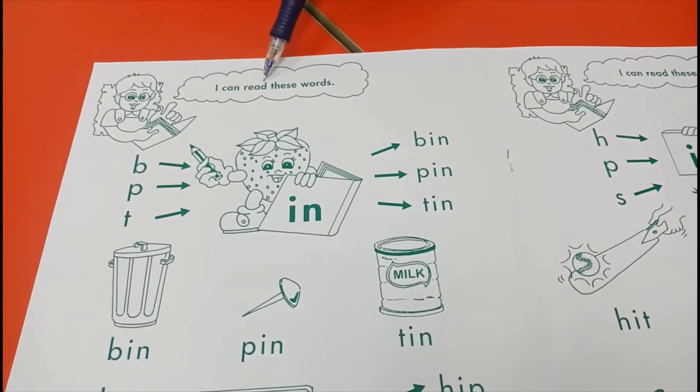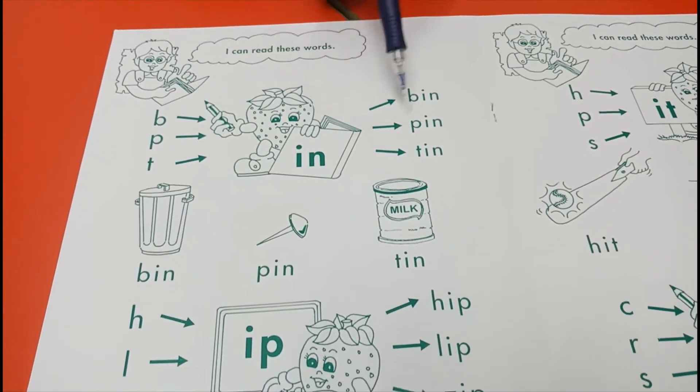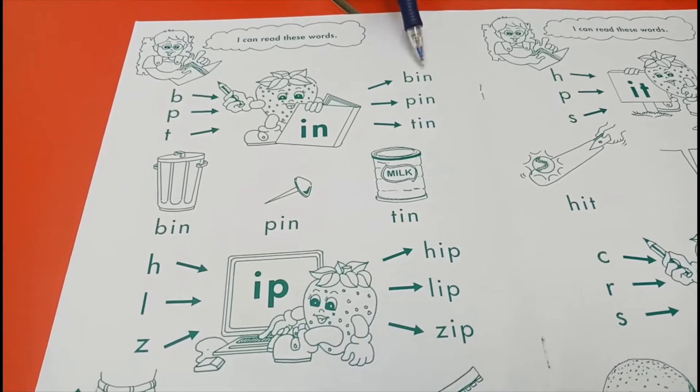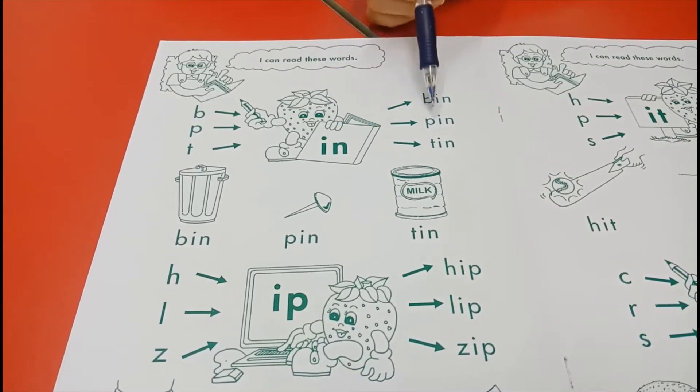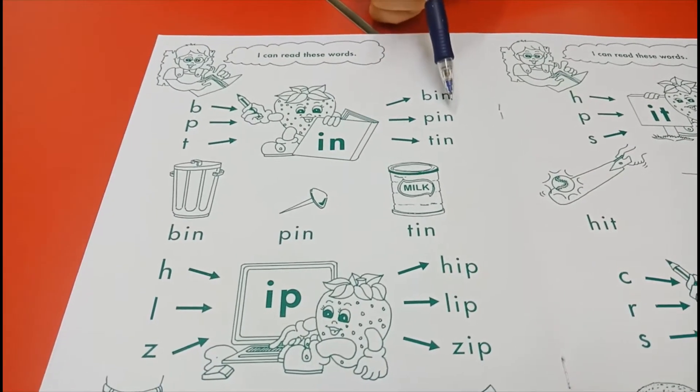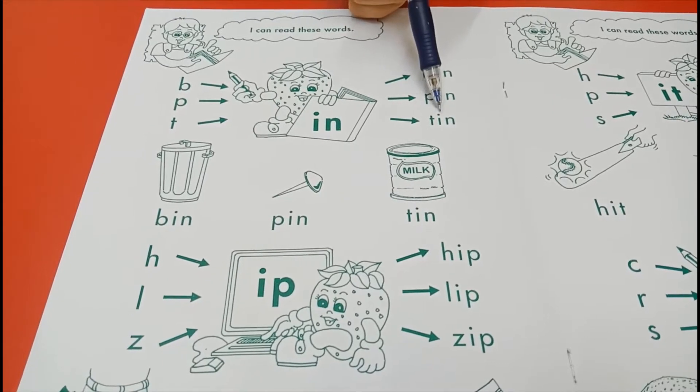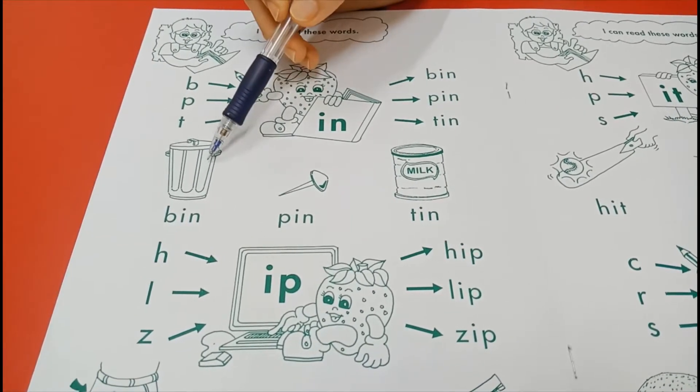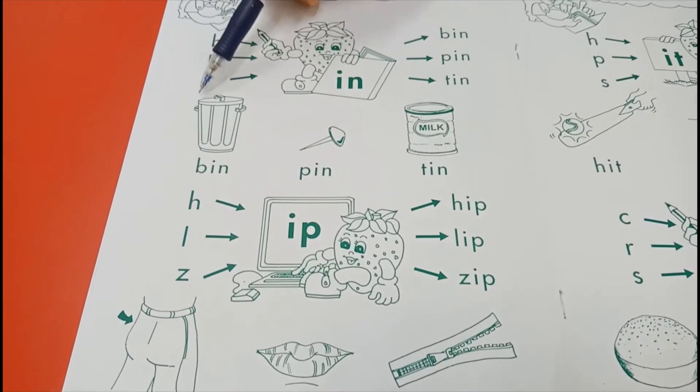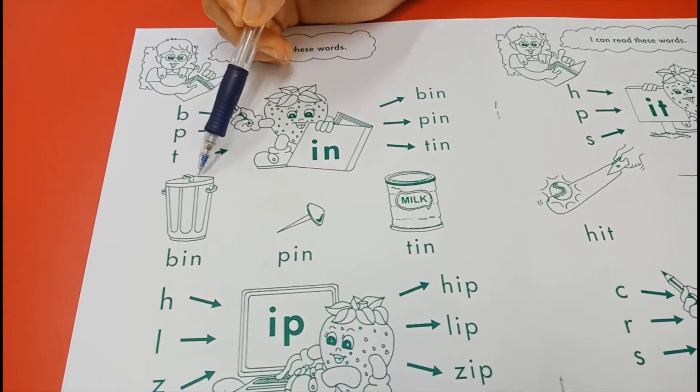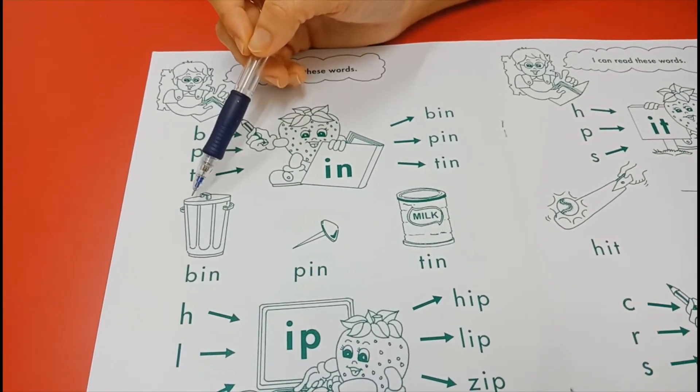I can read these words. Okay, what is bin? Bin is a rubbish bin. Teacher always tells you to throw the rubbish in the dustbin. So that is a bin - rubbish bin, dustbin. All these are bins.